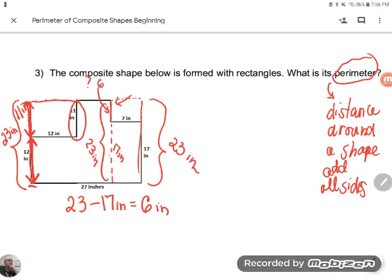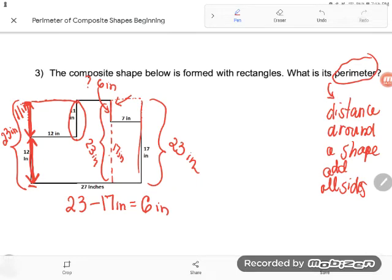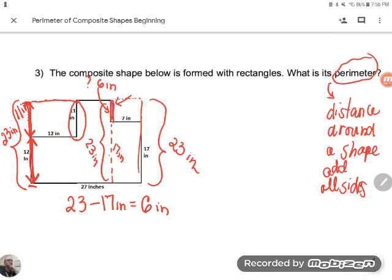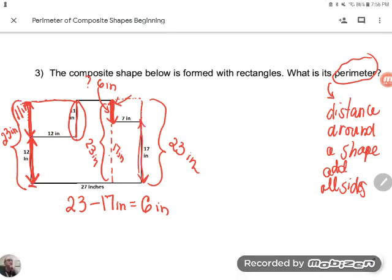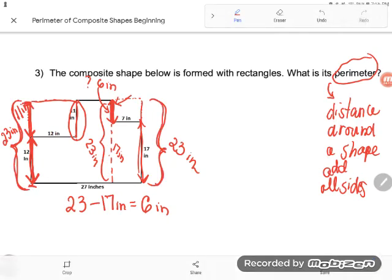That was pretty tricky, but I want you to notice what I used. I used all the parallel pieces, all the pieces that were running in the same direction to help me. So when I was looking for an up-and-down measurement, I used the other measurements that were running up and down, either adding them to find a total or subtracting them to break down a total.